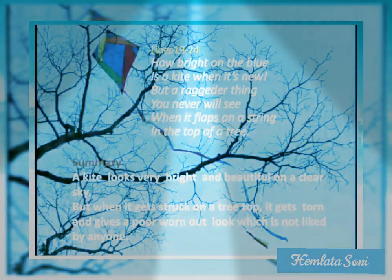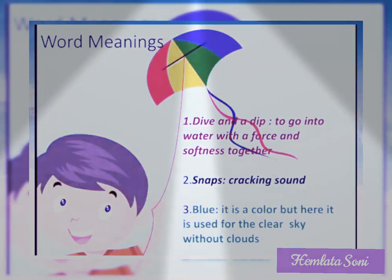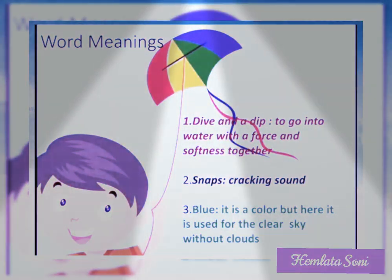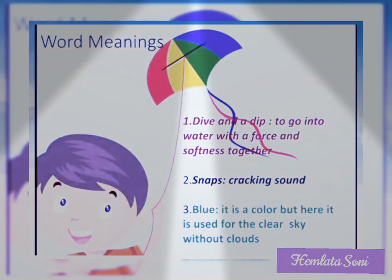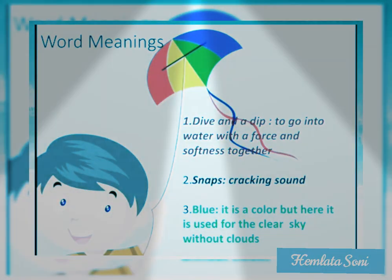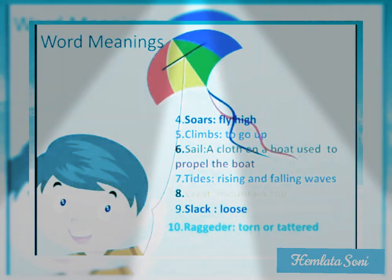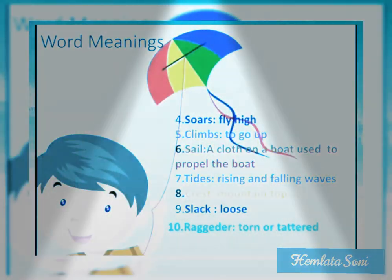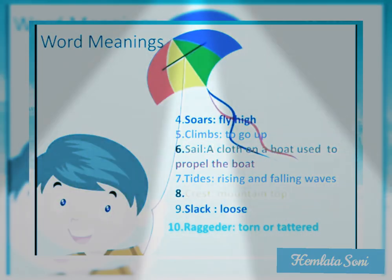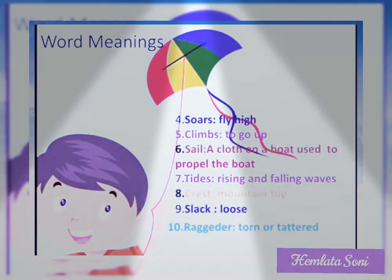Here are the word meanings. Dive and dip: to go into water with force and softness together. Snaps: cracking sound. Blue: it is a color, but in the poem it is used for the clear sky without clouds. Soars: fly high. Climbs: to go up. Sail: a cloth on a boat used to propel the boat. Tides: rising and falling waves. Crest: mountain top. Slack: loose. Regular: torn or tattered.